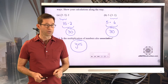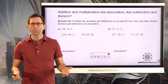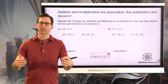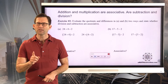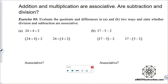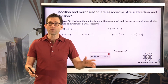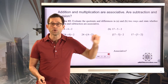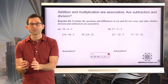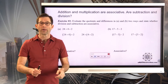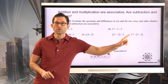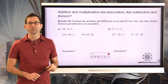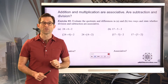The associative property gives us fantastic license to take a calculation and do it in whatever order we want. But let's see if that's true with division and subtraction. Exercise 3: evaluate the quotients and differences in A and B two ways and state whether division and subtraction are associative. In part A we have 24 divided by 4 divided by 2, and in part B we have 17 minus 5 minus 2. Pause the video and take a few minutes to do this.